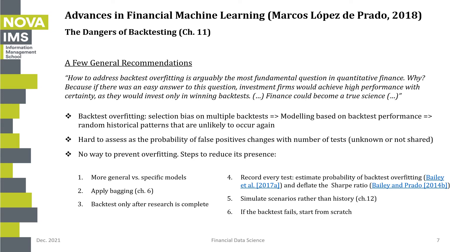After looking at the most common errors, we turn to the author's general recommendations. How to address backtest overfitting is arguably the most fundamental question in quantitative finance — because if there were an easy answer, investment firms would achieve high performance with certainty and finance could become a true science. Backtest overfitting arises from selection bias across multiple backtests: you end up modelling random historical patterns unlikely to occur again, essentially pricing noise over signal.